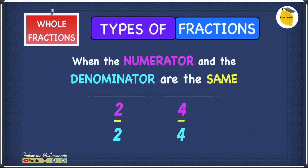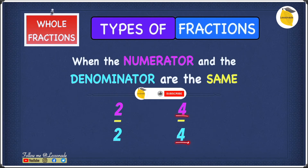Now let's have a look over here. We have 4 as our numerator, and we also have another 4 as our denominator. So 4 and 4, they're the same. As a result, 4 over 4 is also a whole fraction.